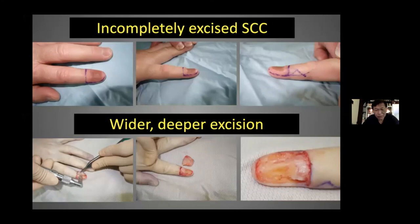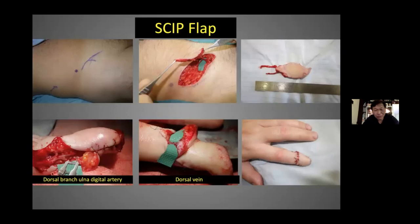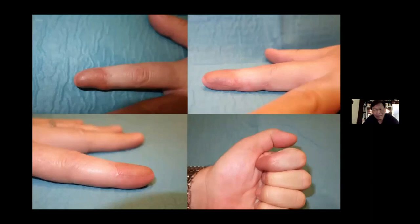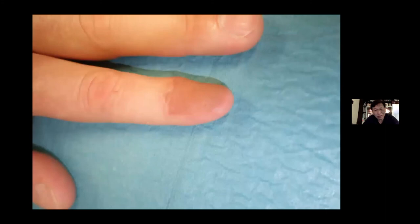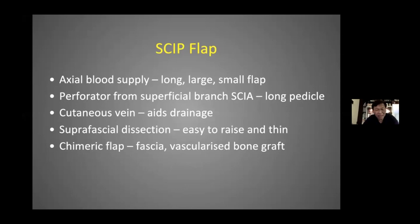This is probably the smallest SCIP flap I've ever done — for an incompletely excised squamous cell carcinoma on the nail bed. I performed a wider excision down to bone, and the patient didn't want shortening at all. The anastomosis was to a dorsal branch of the ulnar digital artery, matching very well, and the dorsal vein to the venae comitantes. That was the initial result after revision — that's the final end result, and he was very happy to have kept the length of his digit.